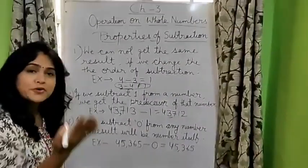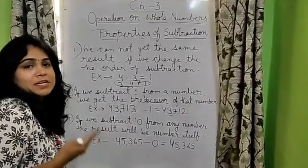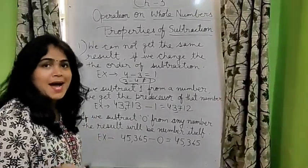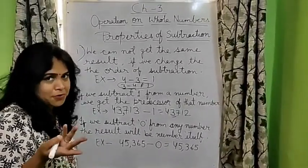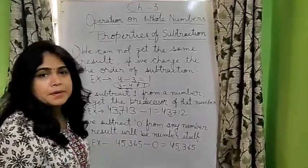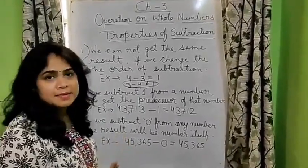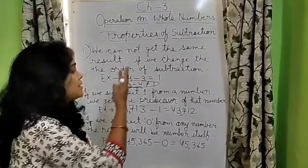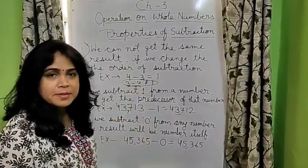Suppose you have 4 toffees and you have given 0 to someone. So, you have removed 0 from that. How many toffees do you have? 4. Similarly, if we subtract 0 from any number, we will get the number itself. So, these are the properties which you have to understand for subtraction.